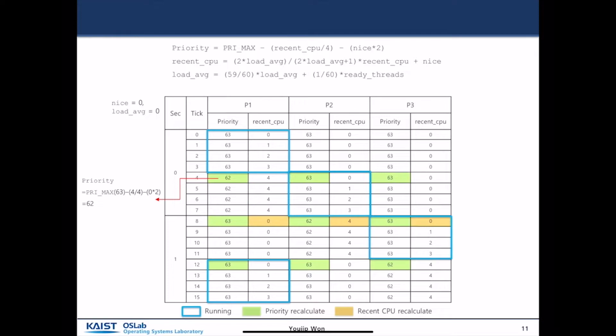Let us look at an example. There are three processes: P1, P2, and P3. The initial value of nice is zero, and the initial value of load_average is also zero. At the first clock tick, the priority of all three threads is 63.